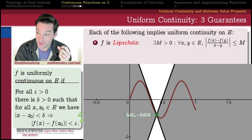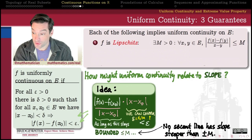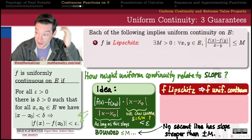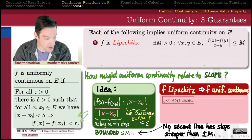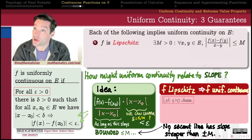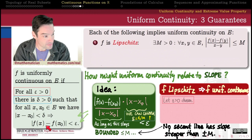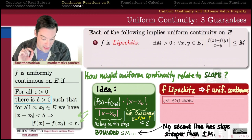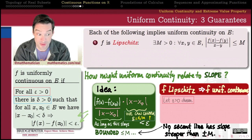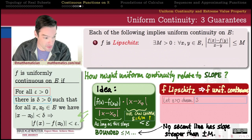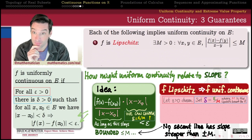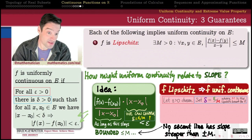Let's write out a proof — all the ingredients are already on screen — for the fact that every Lipschitz function is automatically uniformly continuous. Starting from the definition of uniform continuity: let epsilon be chosen arbitrarily, greater than zero. We want to show there exists a delta such that being delta-close to x₀ means we are epsilon-close to f(x₀), uniformly across the entire domain. Our insight is that we can control the distance between f(x) and f(x₀) to be less than epsilon by choosing delta = ε/M, where M is the Lipschitz bound for f, which exists by definition of Lipschitz.